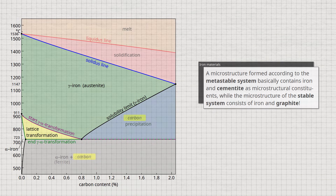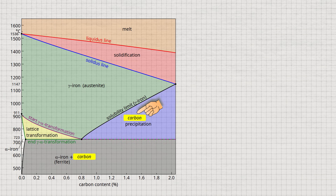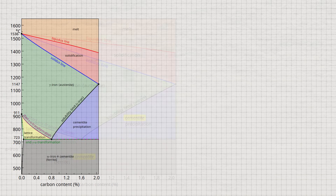With this understanding, the iron-carbon diagram for steels can be made somewhat more precise. Both the precipitation of carbon during gamma-alpha transformation and the precipitation of carbon when the gamma solubility limit is undershot occur in the metastable system for steels in the form of cementite. Note that due to the low carbon content in the area marked in white, the carbon remains dissolved in the alpha iron and therefore no cementite is formed.